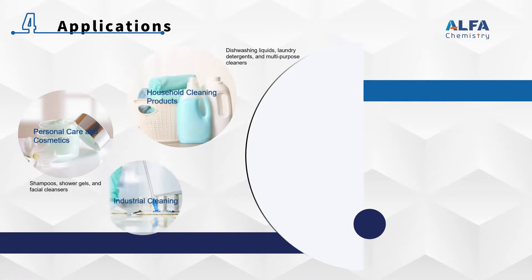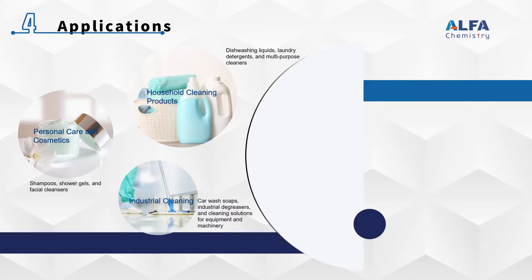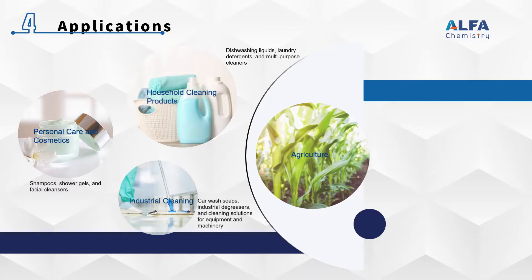In industrial cleaning, amphoteric surfactants are used in applications such as car wash soaps, industrial degreasers, and cleaning solutions for equipment and machinery, providing excellent cleaning power especially for removing oil, grease, and other tough stains. In agriculture, they are used as wetting agents, dispersants, and adjuvants, improving the effectiveness of pesticides, herbicides, and fertilizers by aiding in their spread and absorption on plant surfaces.